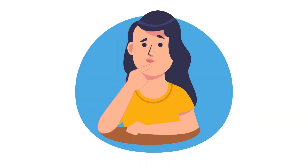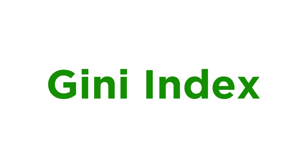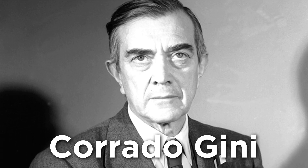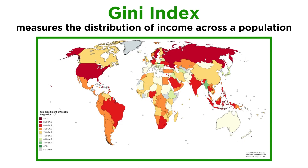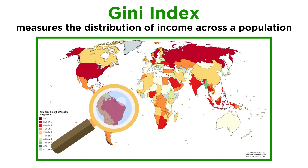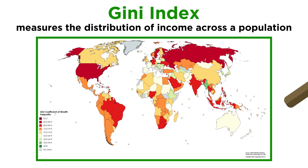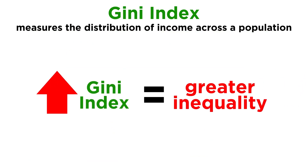So how do we measure wealth inequality? Economists generally prefer using what's known as the Gini Index. Named after the Italian statistician and sociologist who developed it, Corrado Gini, the Gini Index measures the distribution of income across a population — across the whole of society rather than simply comparing different income groups. A high Gini Index indicates greater inequality, with more wealth in the hands of the few.